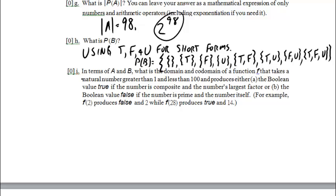In terms of A and B, what is the domain and codomain of a function F that takes a natural number greater than one and less than a hundred and produces either the Boolean value true if the number is composite and the number's largest factor, or the Boolean value false if the number is prime and the number itself. So for example, F of 2 produces false in 2, F of 28, because 28 is not prime, it's 4 times 7, produces true and the largest factor, which is 14.